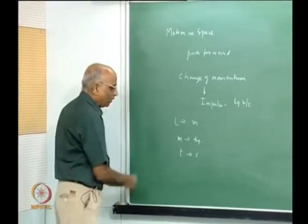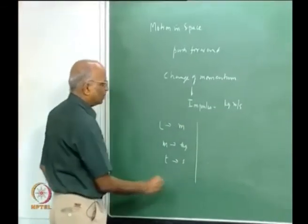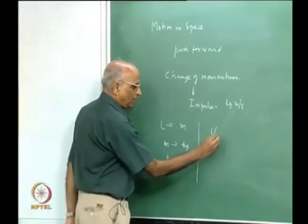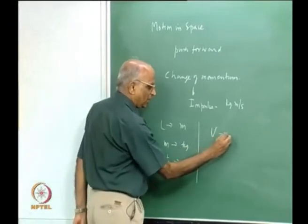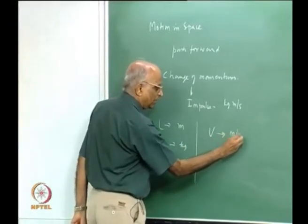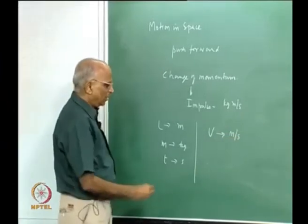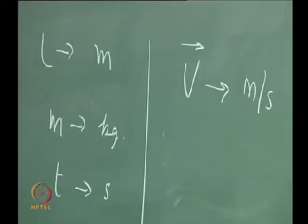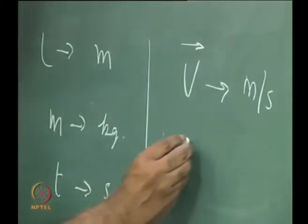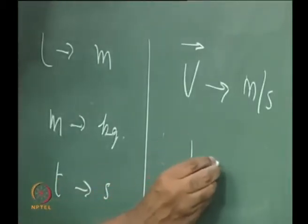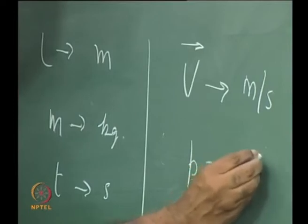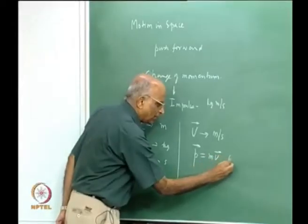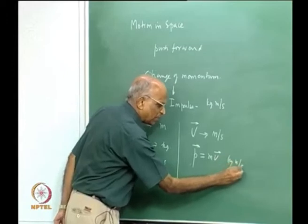Having defined these three quantities, for change of momentum we need velocity, which is defined as meter per second. Distance is a vector, so velocity is also a vector. Therefore momentum p equals mass into velocity, and momentum p is also a vector, with unit kilogram meter per second.